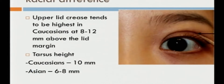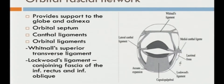The lid crease has racial differences. The upper lid crease tends to be highest in location in the Caucasian population at around 8 to 12 mm above the lid margin, because of the larger tarsus height in Caucasians, which is about 10 mm, as against 6 to 8 mm tarsus height in the Asian population.